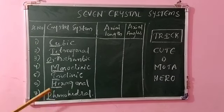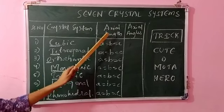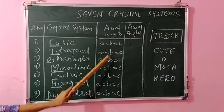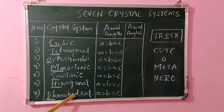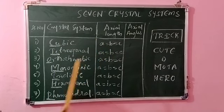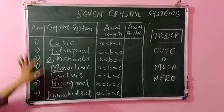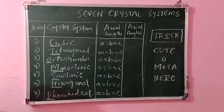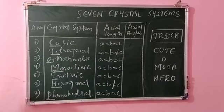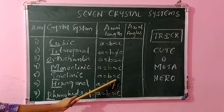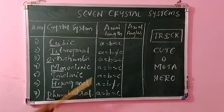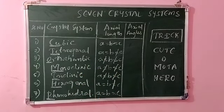Now, how to remember the axial lengths: in all crystal systems you have a, b, c, but they may or may not be equal. The trick is to write a = b = c seven times. The first one — cubic — you don't touch: a = b = c stays the same. The last one — rhombohedral — also a = b = c. For tetragonal, cancel the last equality, so a = b ≠ c. For hexagonal similarly a = b ≠ c. For the remaining three — orthorhombic, monoclinic, triclinic — all three are different: a ≠ b ≠ c.